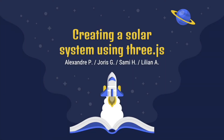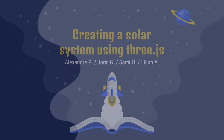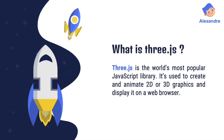Creating a solar system using Three.js. Three.js is the world's most popular JavaScript library. It's used to create and animate 3D graphics and display them in a web browser. It manipulates a JavaScript API called WebGL to render graphics in an HTML5 canvas component. It was first released by Ricardo Cabello on GitHub in April 2010. You don't even need to download a special application or a plugin to use Three.js.